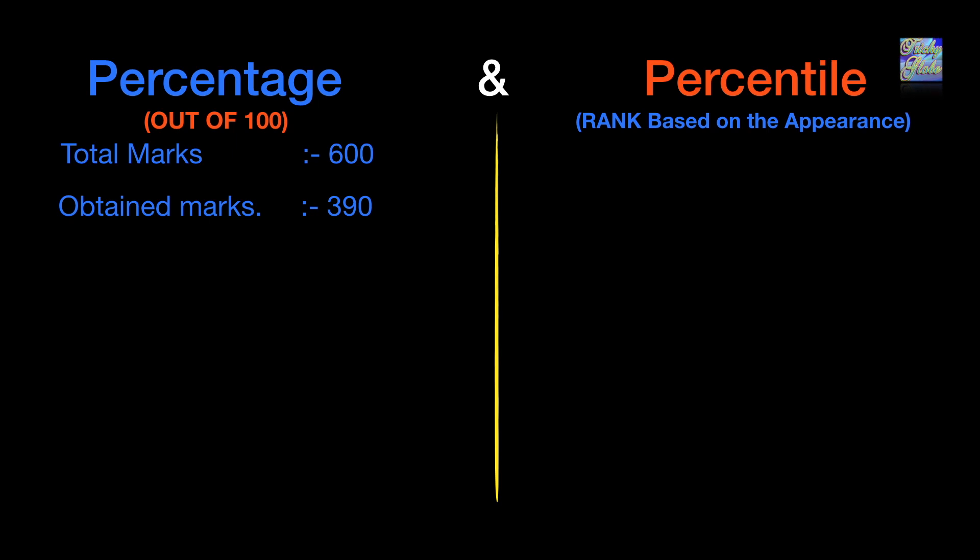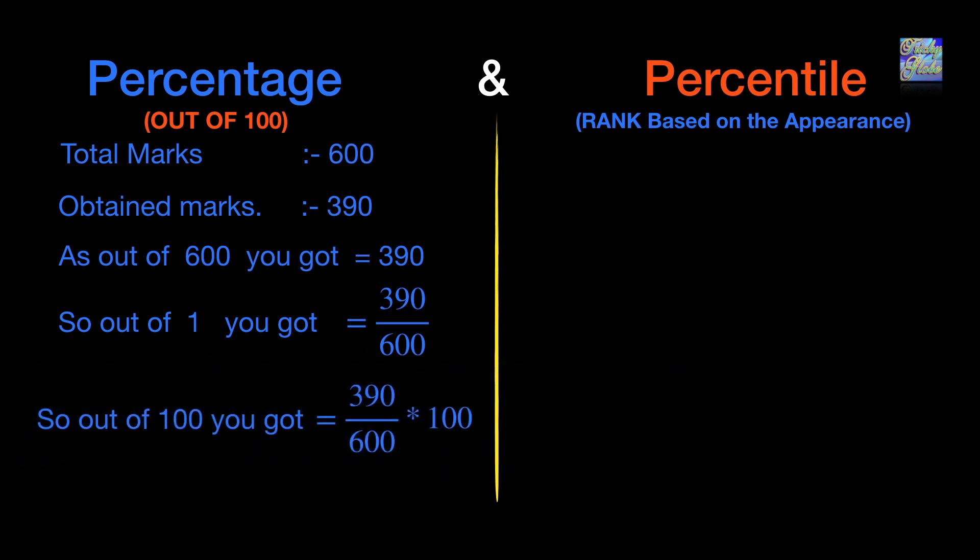Now we can use the unitary method. Out of 600 you got 390, so out of 1 you get 390/600. So out of 100, it's 390/600 × 100. We can cancel 100 and 600, then cancel again with 390, which gives us 65. So the percentage is 65%.